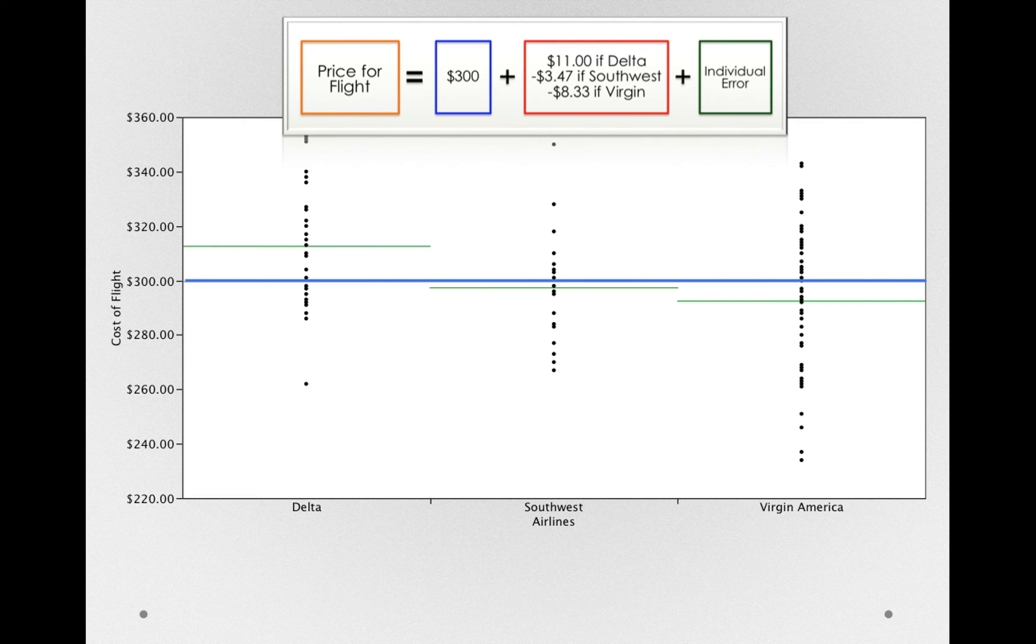Because going forward, maybe we want to know if Delta, Southwest, and Virgin actually differ in their overall costs. That is, overall, if we were to observe everybody, would these airlines actually differ? We're going to be able to make an inference about that using those cost offsets. But we always have to keep in mind that there's still individual error. Our statistical models aren't reflecting every person's exact value, but instead the average within these different groups.